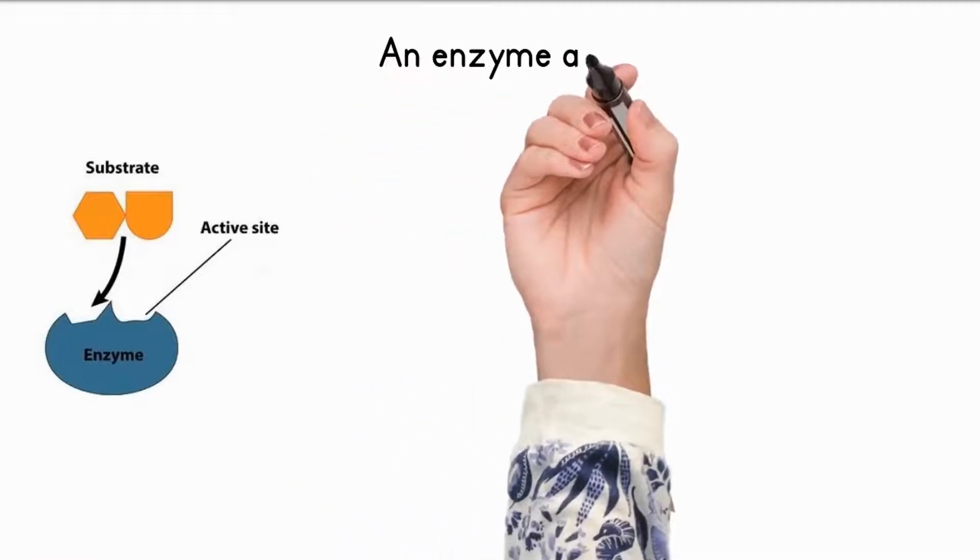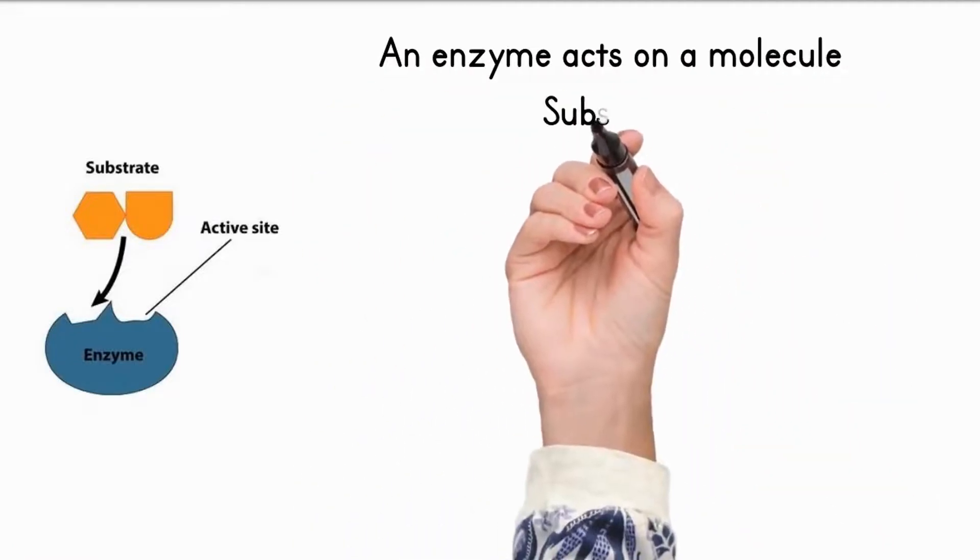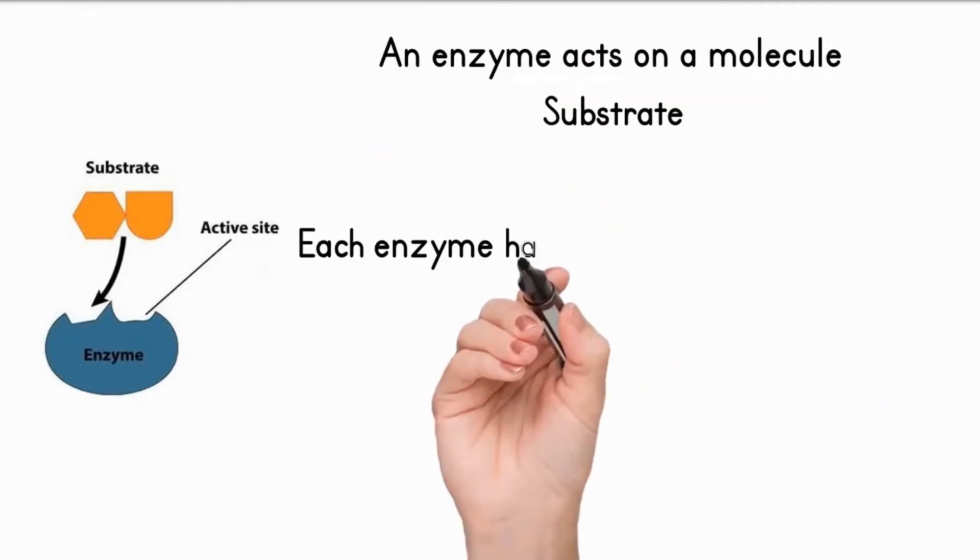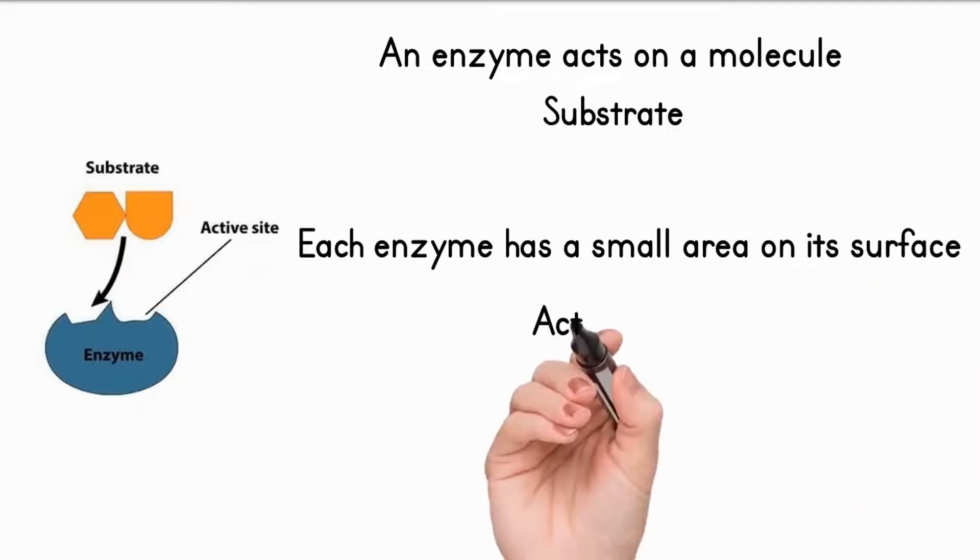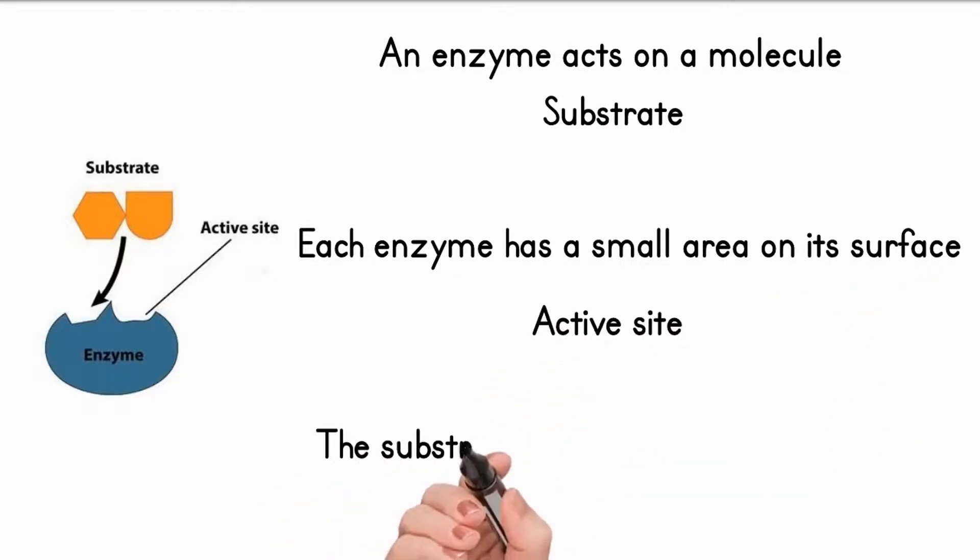The molecule that an enzyme acts on is called substrate. Each enzyme has a small area on its surface called the active site. The substrate attaches to the active site of the enzyme.